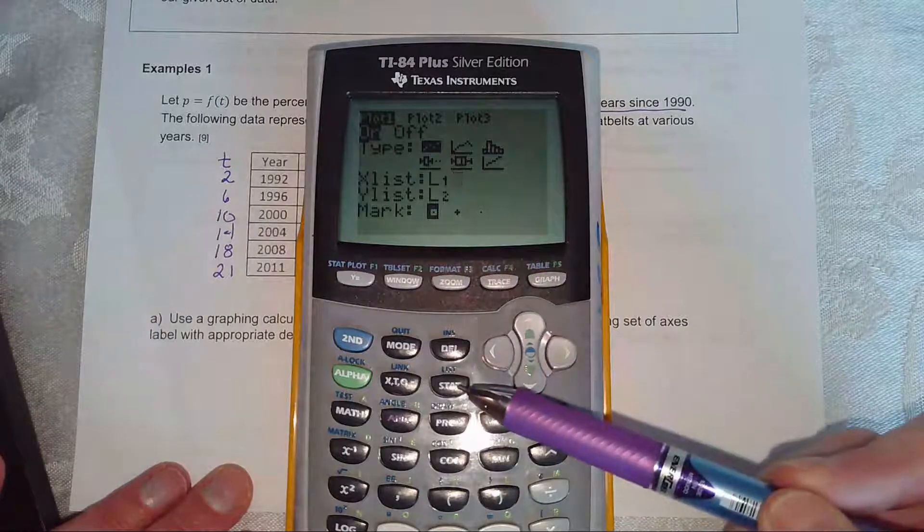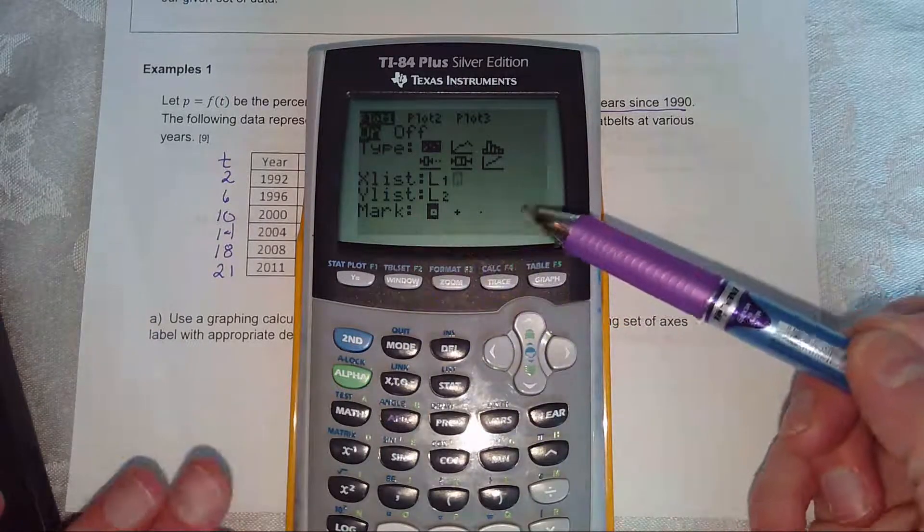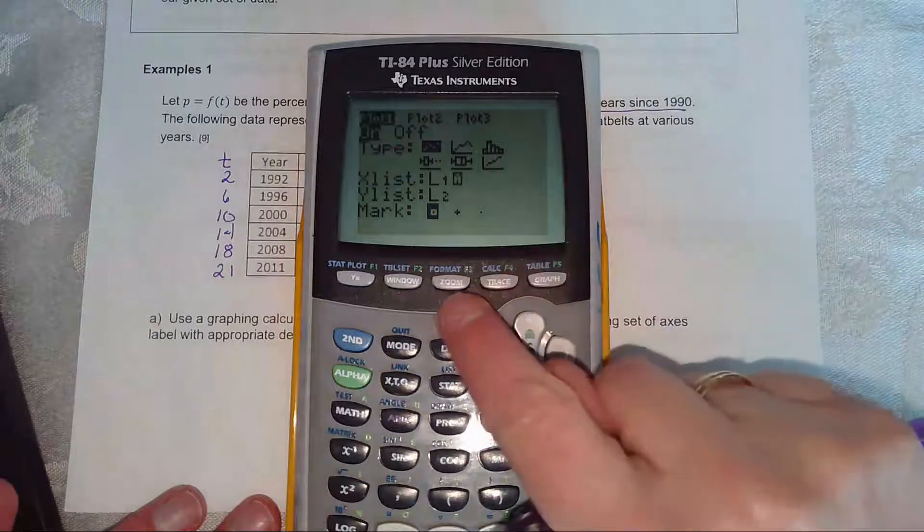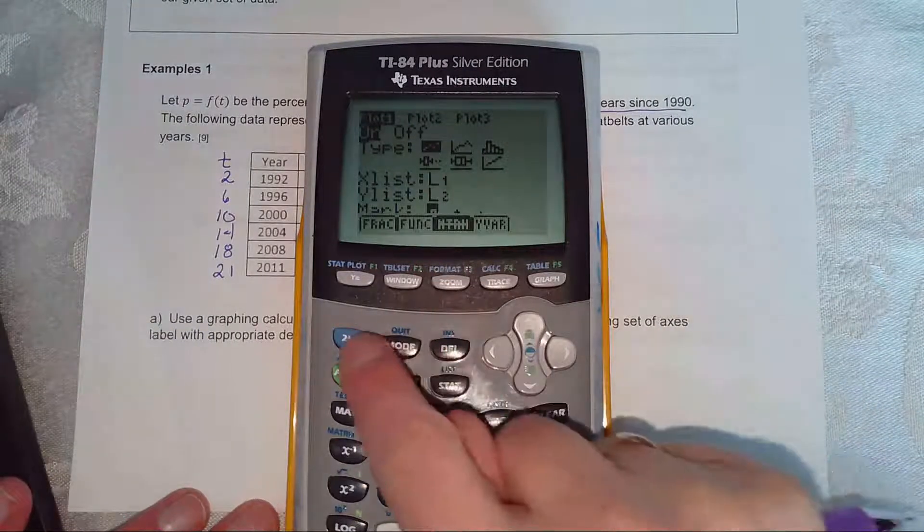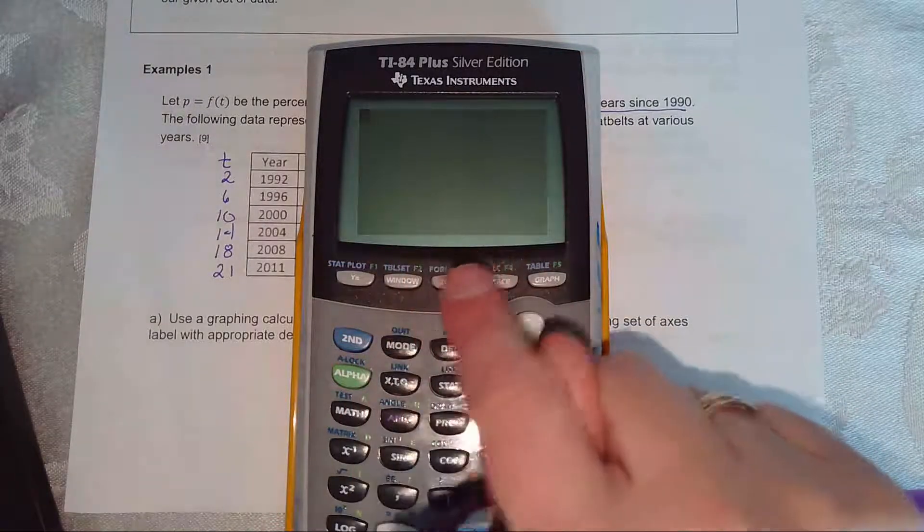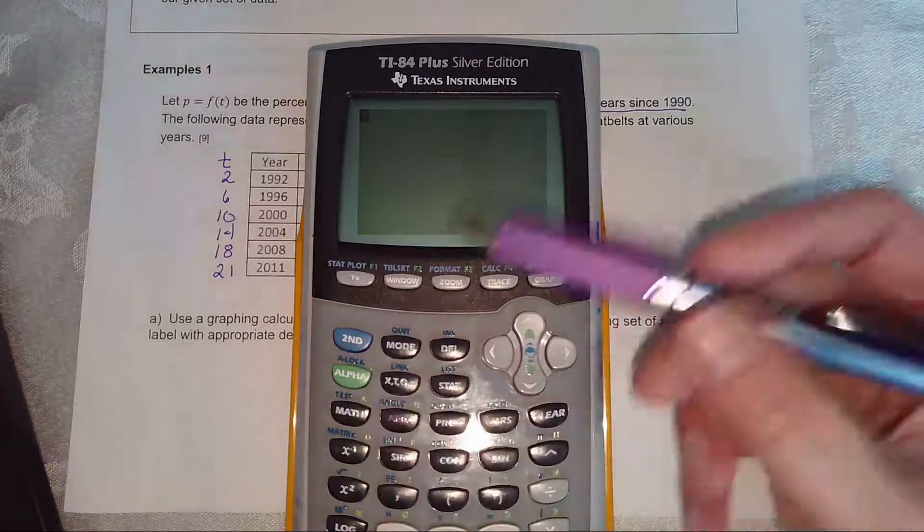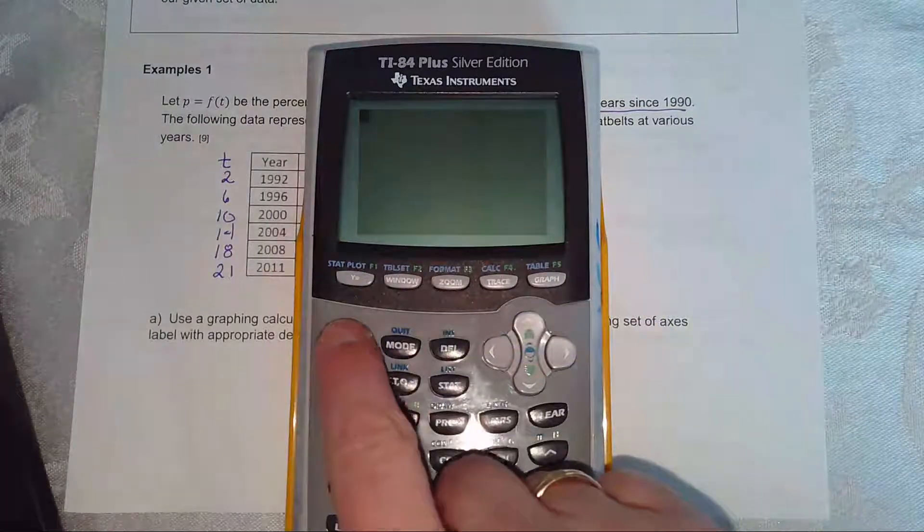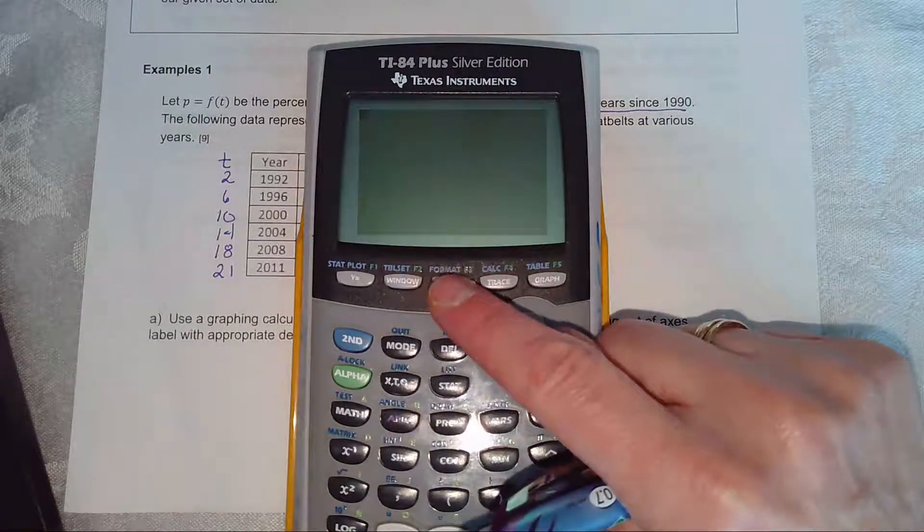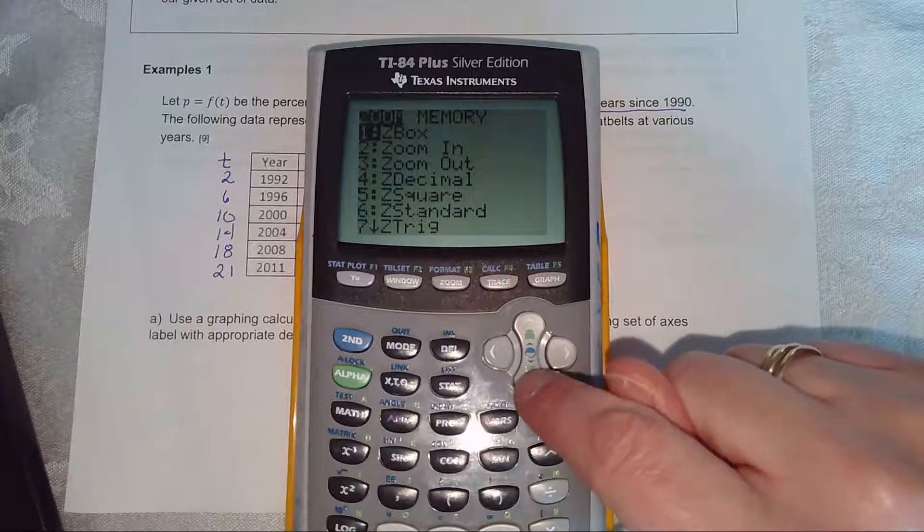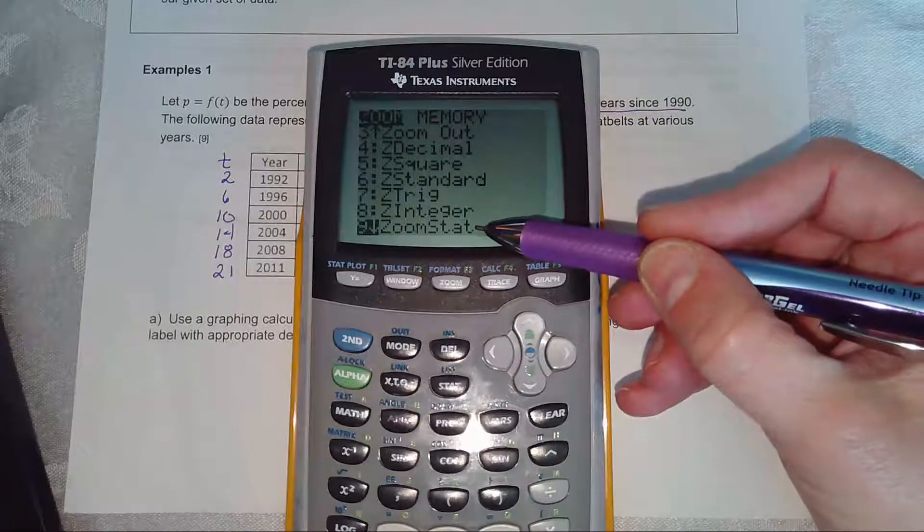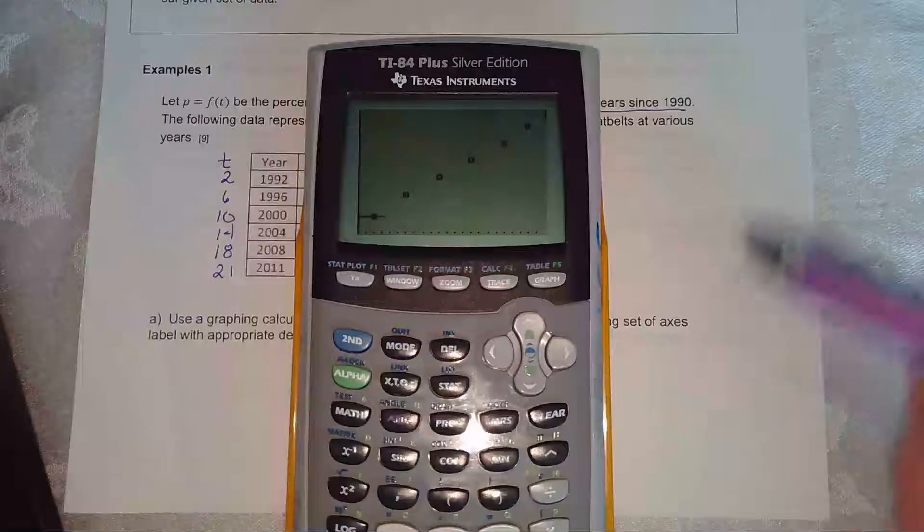So we've learned stat. We've learned stat plot. And now we want to say to the calculator, can you please make a window that will plot those points? And so you can go into zoom. I'm going to quit out of that mode. Something happened when I hit zoom. So if you hit an option and something weird happens, just quit out of that mode. Do you see quit is in the blue? So I just hit second quit and it just gets me out of that mode. So anyway, now I'm going to go ahead and hit zoom. So when I hit zoom, there it comes up. I'm just going to show you what it looks like. You just want to hit nine. Option nine is called zoom stat.